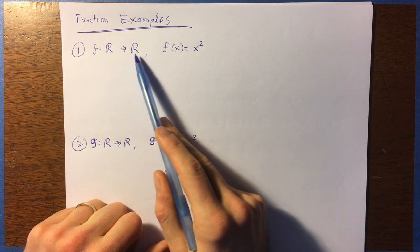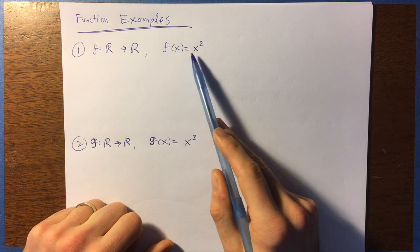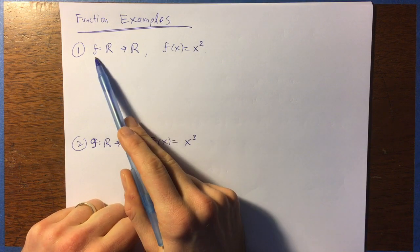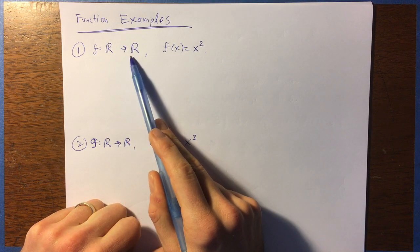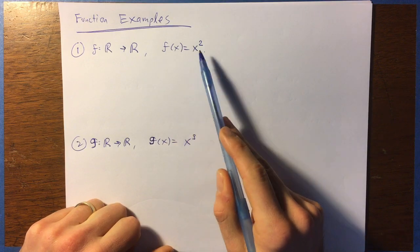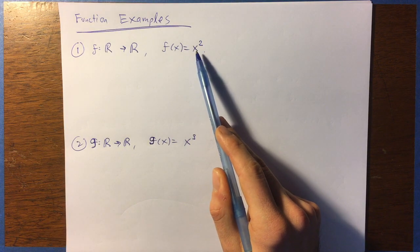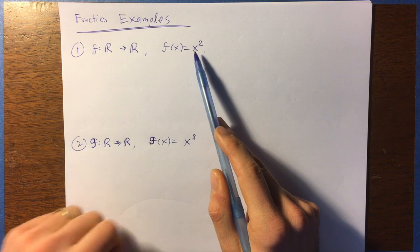But this function f, let's say that this is defined by the rule f of x equals x squared. Okay, so here we're saying the function and its domain and codomain. Here we're saying the actual sort of writing out the rule that we can use to obtain the outputs from the inputs. So that's f.